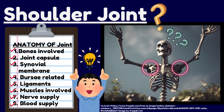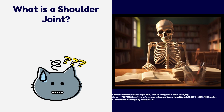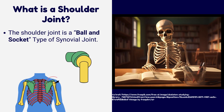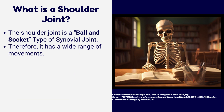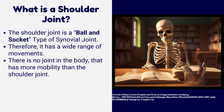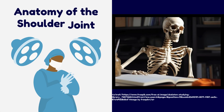In this video we will talk about the anatomy of the shoulder joint. The shoulder joint is a ball and socket type of synovial joint, therefore it has a wide range of movements. There is no joint in the body that has more mobility than the shoulder joint.